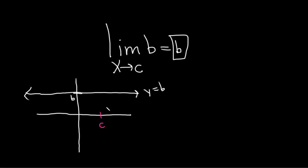Let's also assume that c is positive for the sake of explanation. If we approach from the left, as x gets infinitely close to c from the left, the y value is just b. As x gets infinitely close to c from the right, the y value is also just b. No matter what, the y value is b, and so the limit is simply b.